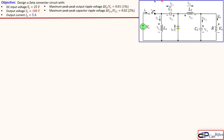The configuration for the Zeta converter is similar to the Cuk converter and also the SEPIC we have discussed in the previous example. The videos of those two converters can also be found in the description of this video when you click on the playlist for the power electronics.